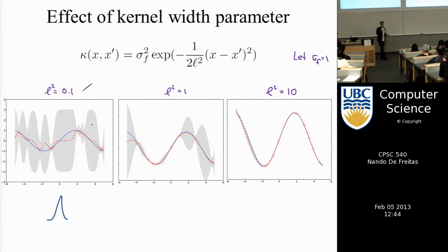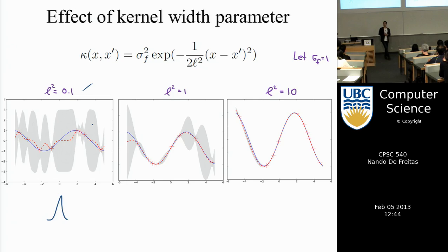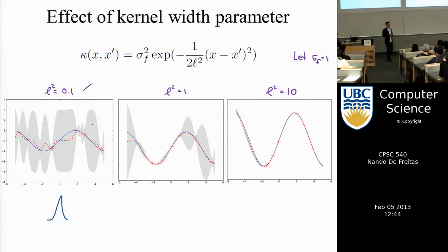The simplest way to choose the kernel width, which you already know, is cross-validation. We control smoothing by controlling this parameter of the kernel. One way to choose it is by doing cross-validation, like you've done before.